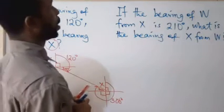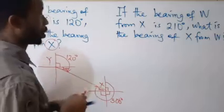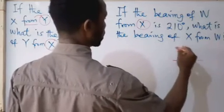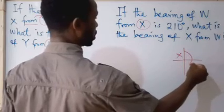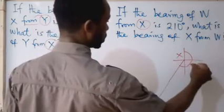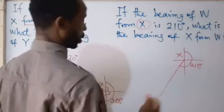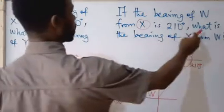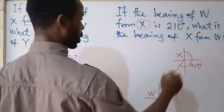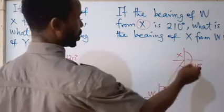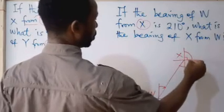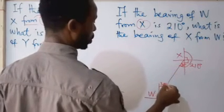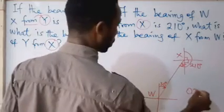The next question: if the bearing of W from X is 210 degrees, let's start drawing from X. My total is 210 — I move from the north: 90, 180, and 210 is somewhere past that. So W is here. To find the bearing of X from W, I break 210 into 90 plus 90 — that's 180 — and 30 more to make 210. So this remaining space is 30 degrees, meaning this alternate angle is also 30. The answer is 030 degrees.